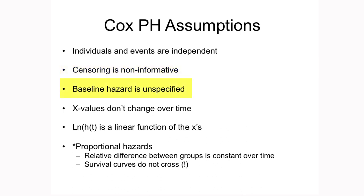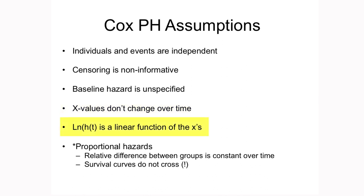The next property — more of a property than an assumption — is that the baseline hazard is unspecified, so our model doesn't tell us what it is. We're also assuming that the x values don't change over time: if you were a smoker at the beginning of the study, we assume you'll maintain that status throughout. There are extensions of the Cox model that allow for time-varying variables, such as time-updated Cox models, but we won't discuss those here. Another property is that the log hazard rate is a linear function of the x's — just like the log odds in logistic regression or the log rate in Poisson regression — and we can check this with residual plots.